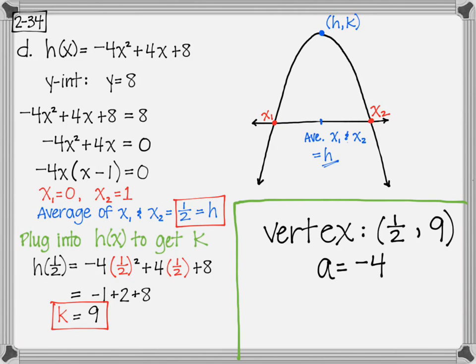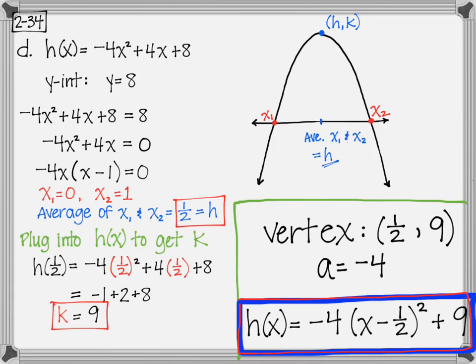So we know that we have a vertex of 1 half comma 9, and the a, remember the a came from the function, negative 4, and so we can write the vertex form of the parabola.